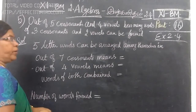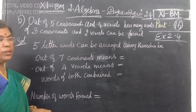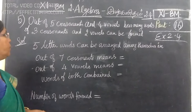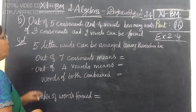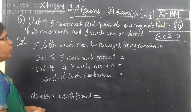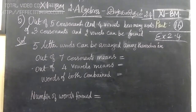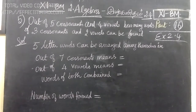Next, question number 5 is: out of 5 consonants and 4 vowels, how many words of 3 consonants and 2 vowels can be formed?